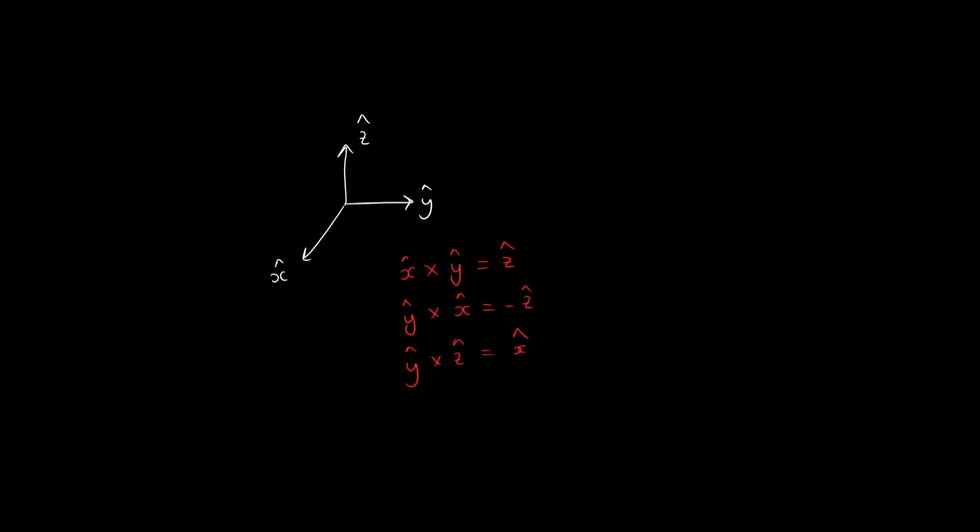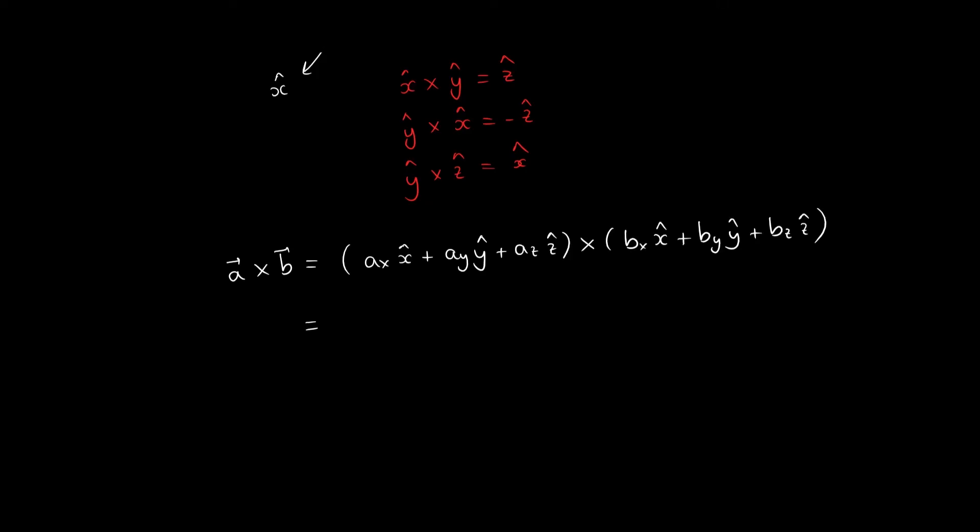This can be very useful if we want to find the cross product using only the components of the vectors. Following a similar procedure as we did for the dot product, we can say that a cross b is equal to the components of a cross the components of b. We can now expand these two brackets, but remembering that we have to do the cross product, and we get the following expansion.